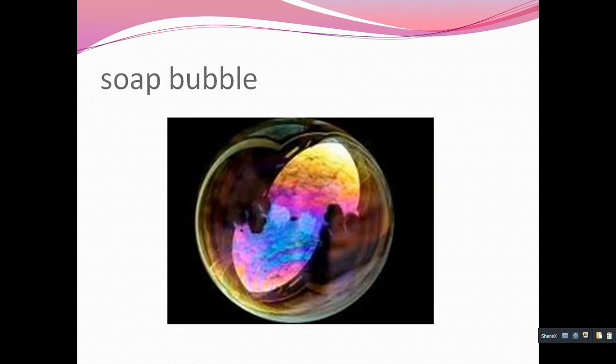Newton's rings are generally observed due to the thin film. First of all, you should know what is the meaning of a thin film. A thin film may be an air film or a liquid material, but the thickness of the film is very very small, which is almost of the order of the wavelength of visible light. An example of a thin film is the soap bubble, which all of you have observed in childhood.